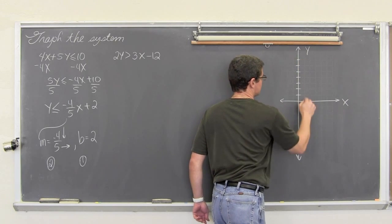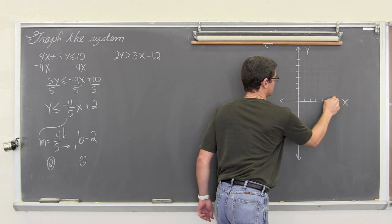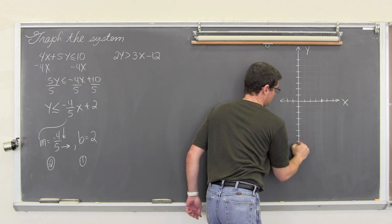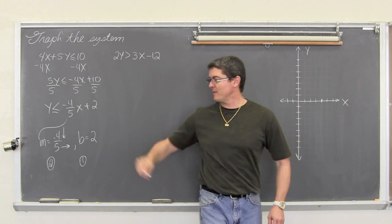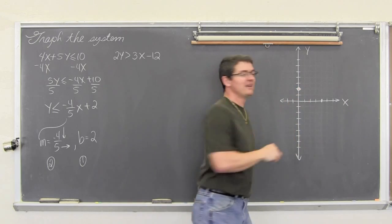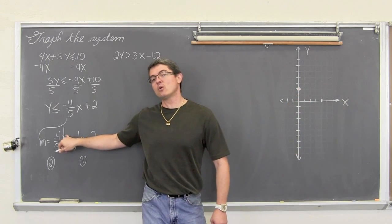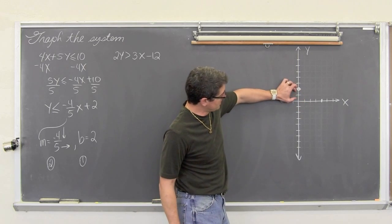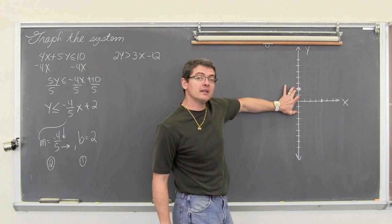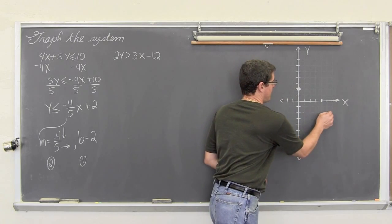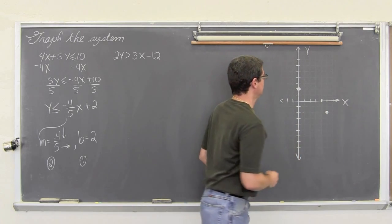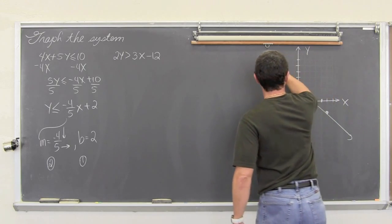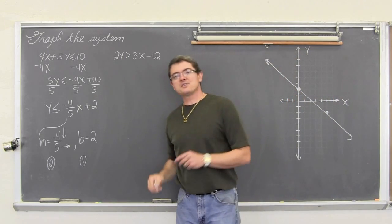We do the y-intercept first and then work on the slope. With the equal sign we make a solid line. This line crosses the y-axis at 2. From the y-intercept we go down 4 and over 5. We do our best to get a somewhat straight line and hit the points as closely as possible. Now the second inequality — let's do this one in yellow. We divide both sides by 2 and get y is greater than 3/2 x minus 6.